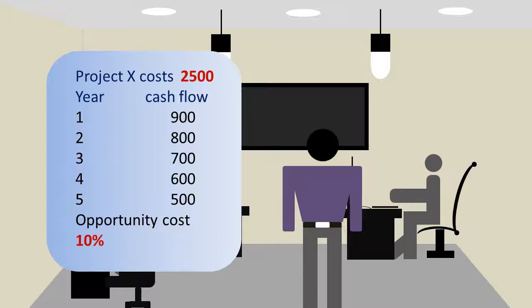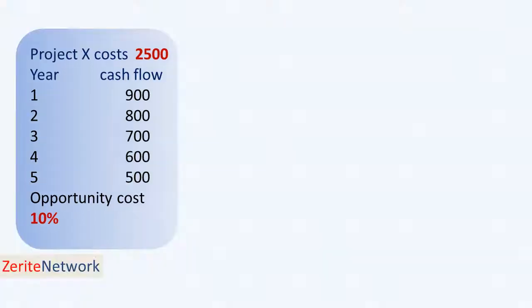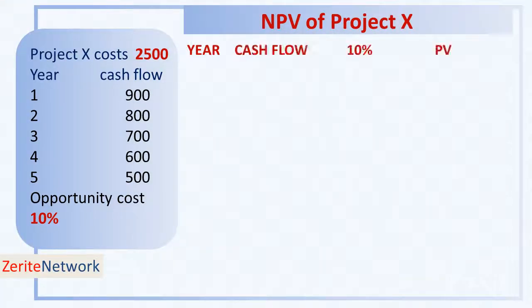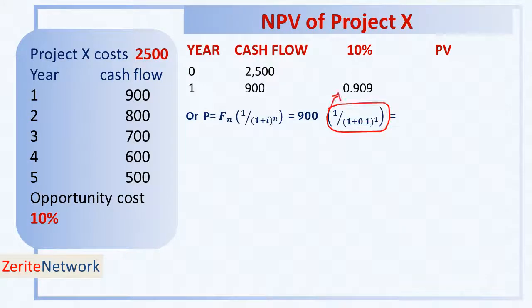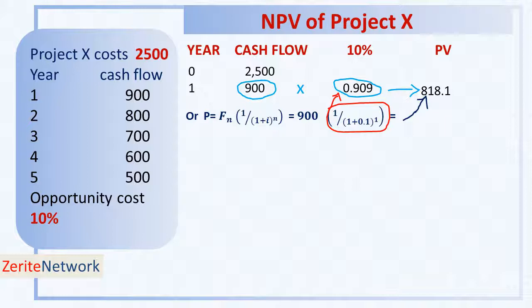First of all, present value can be arrived at using a calculator or by using a present value factor table. So, this is how we'll calculate that. You'll have the year, the cash flow, and a 10% column. Year 0, our initial investment is $2,500. Year 1, cash flow is $900, and the present value factor is 0.909, which you can get from the table. Or, you can simply calculate it using the formula, in which case we take $900, multiply by the factor, and that gives us $818.18. You could also just multiply $900 by the present value factor and get the same result.